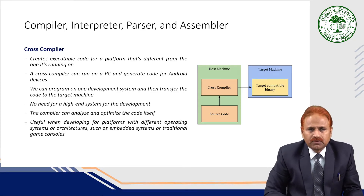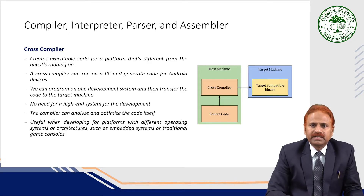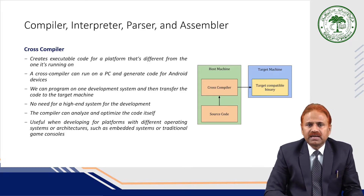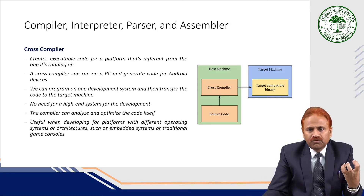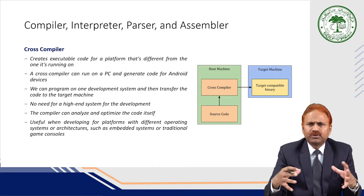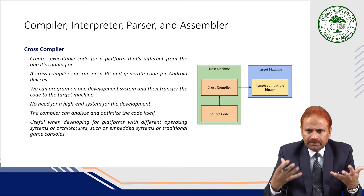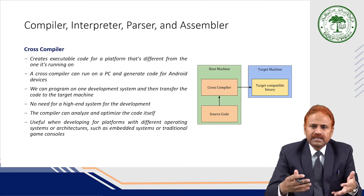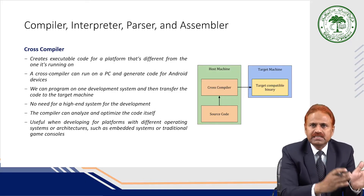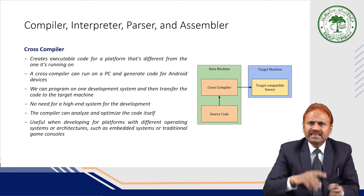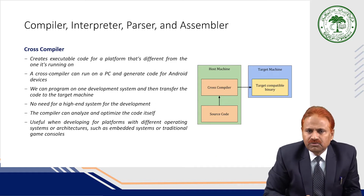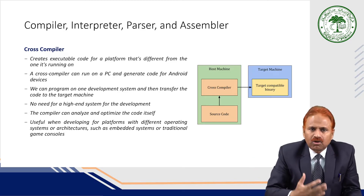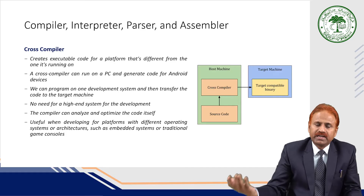One type is known as a cross-compiler. It creates executable code for a platform that is different from the one it is running on. For example, a cross-compiler can run on a PC and generate code for Android devices. This is useful when a mobile phone doesn't have the capacity to run the compiler itself — we run the compiler on a separate machine like a PC or desktop, generate the executable file, and transfer it to the target machine.